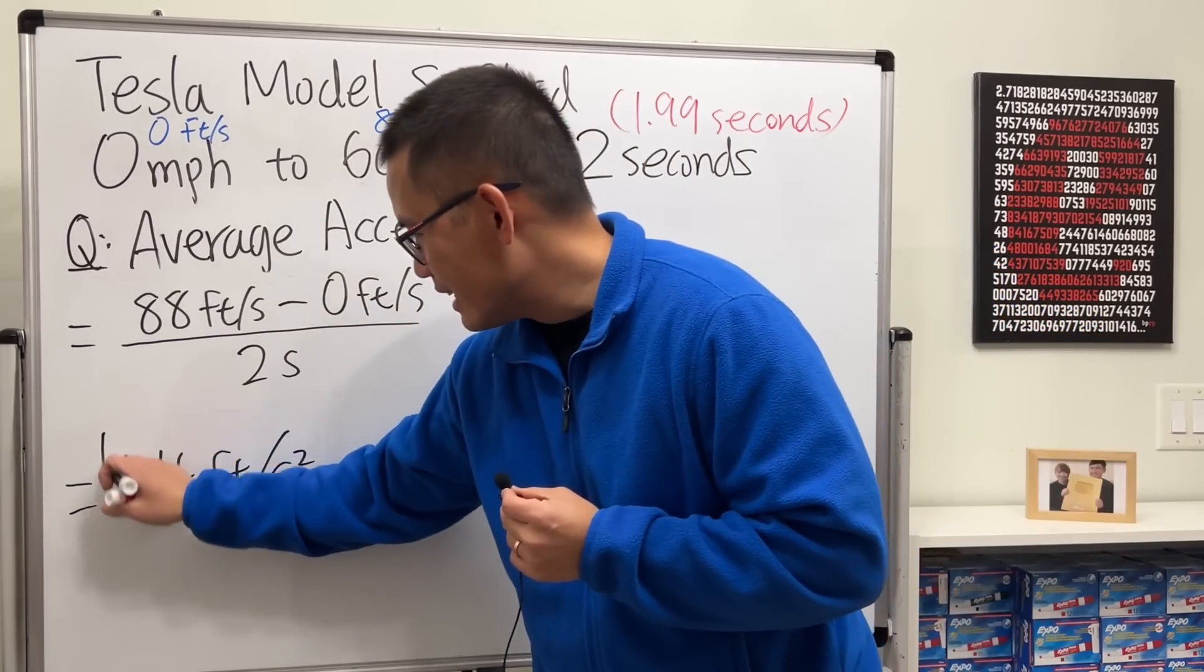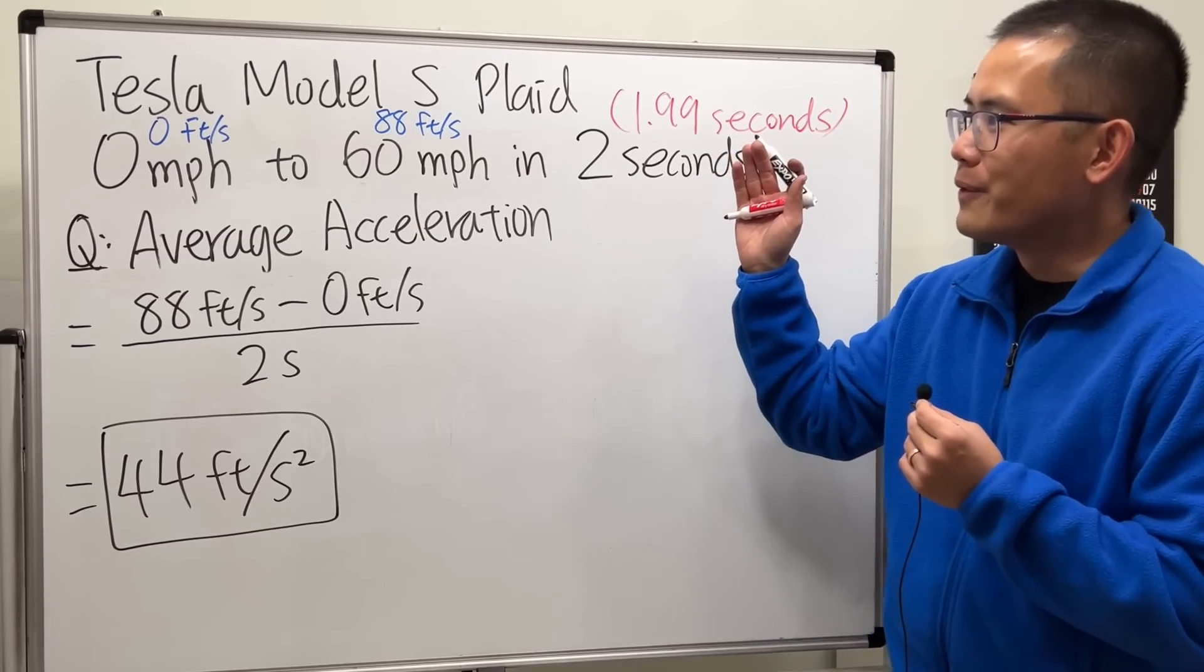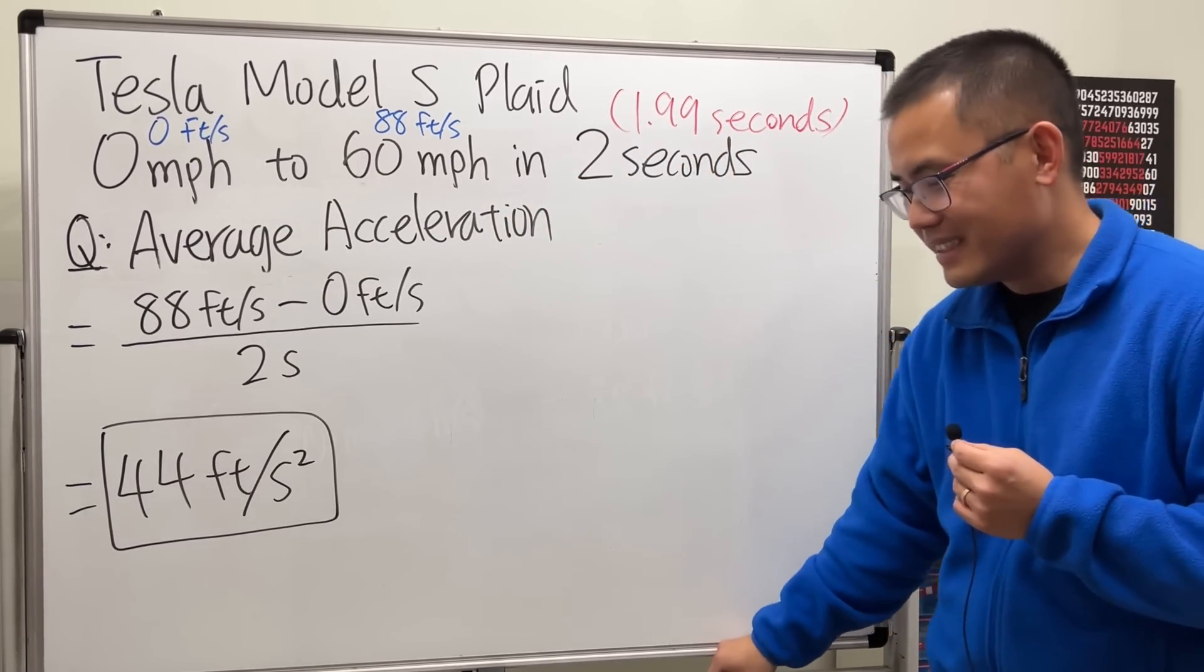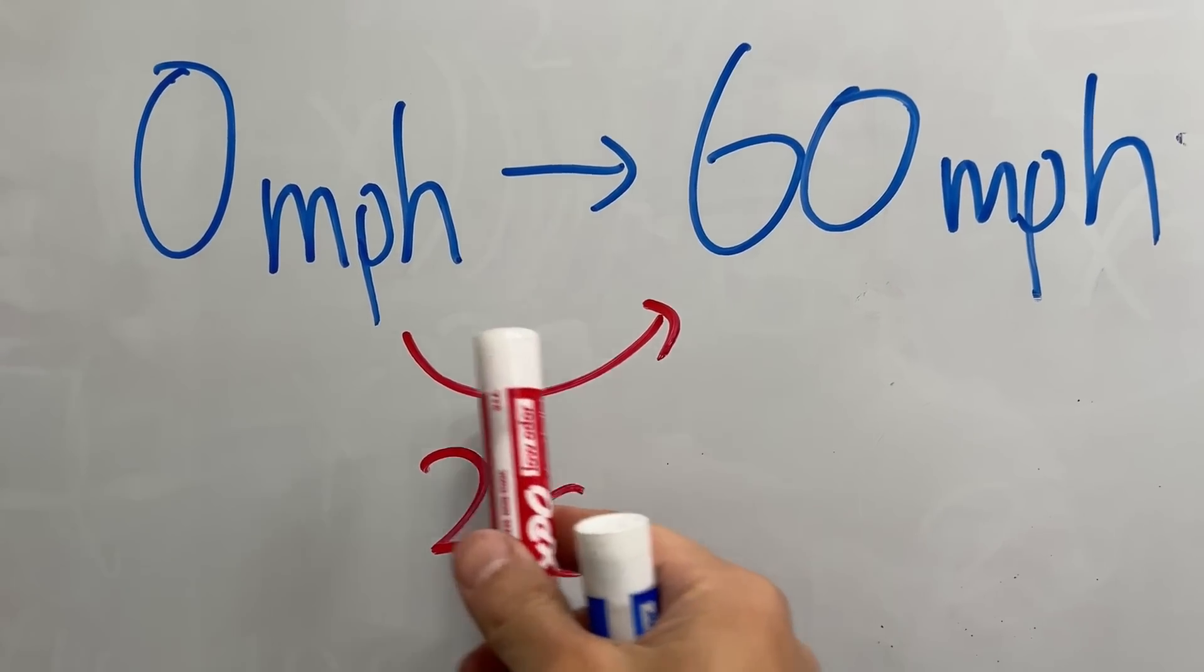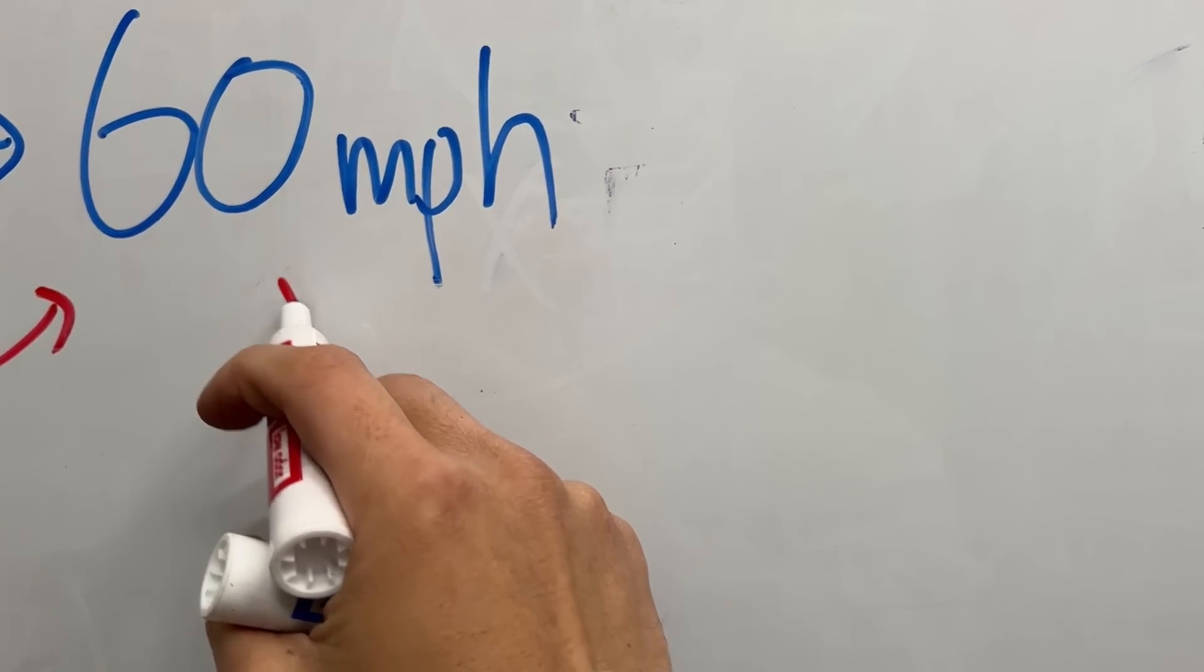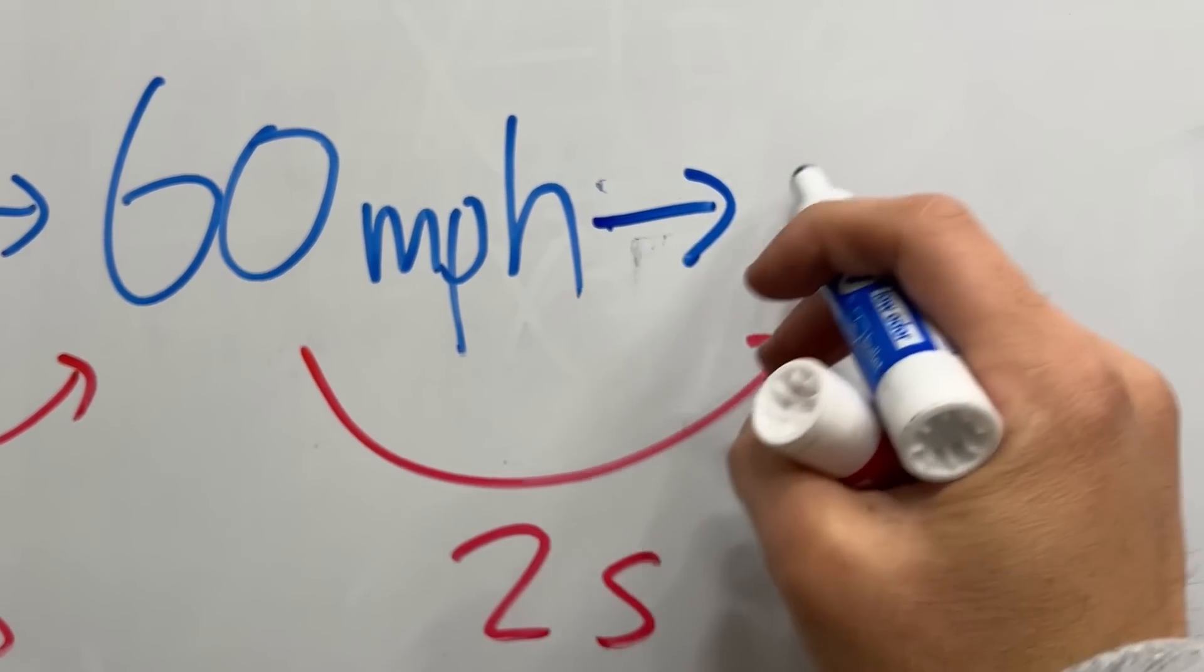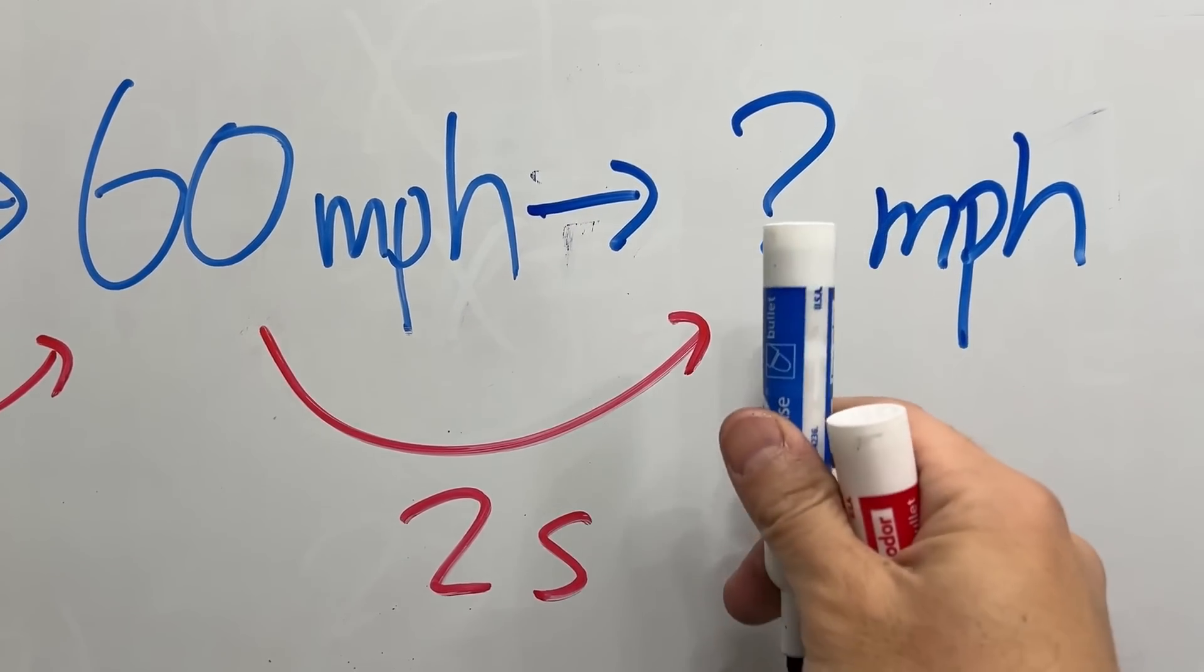And that's it, that's the average acceleration when you go from zero to 60 in two seconds. Okay, so here's a question for you guys: it takes two seconds to go from zero to 60 miles per hour, so what if we go for another two seconds, then what'll be the speed right here right? Let me know.